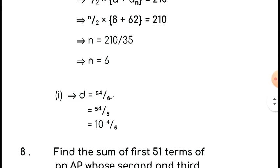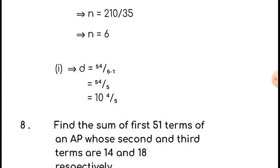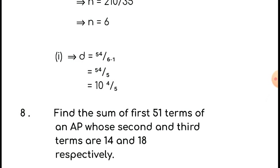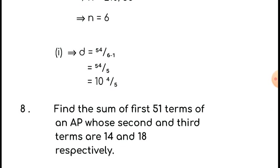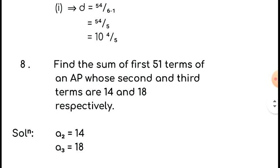Then we come to another problem from the same exercise, question number 8: find the sum of the first 51 terms of an arithmetic progression whose second and third terms are 14 and 18 respectively. Since the second and third terms are given, we can find the common difference.